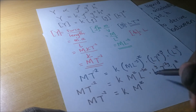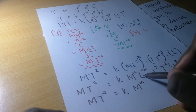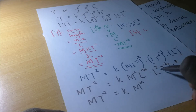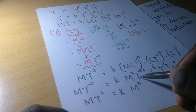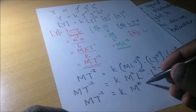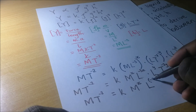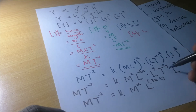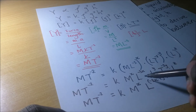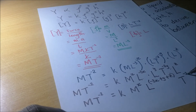For the L terms, since the bases are the same we add the powers: L to the power (−3X + Y + Z). For the T terms we have T to the power negative 2Y. So the full expression becomes M·T⁻² equals K times M to the power X, L to the power (−3X + Y + Z), T to the power negative 2Y.